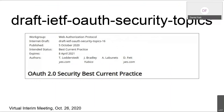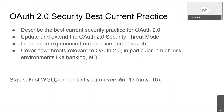Welcome everybody. We want to talk about the OAuth 2.0 Security Best Current Practice document, which is a draft by Torsten, John, Andre, and me. The document sets out to describe the best current security practice for OAuth 2.0. It updates and extends the OAuth 2.0 security threat model. We try to incorporate experience from practice as well as from research, and cover new threats relevant to OAuth 2.0, including those that arise in high-risk environments such as open banking, eID schemes, or electronic signatures.